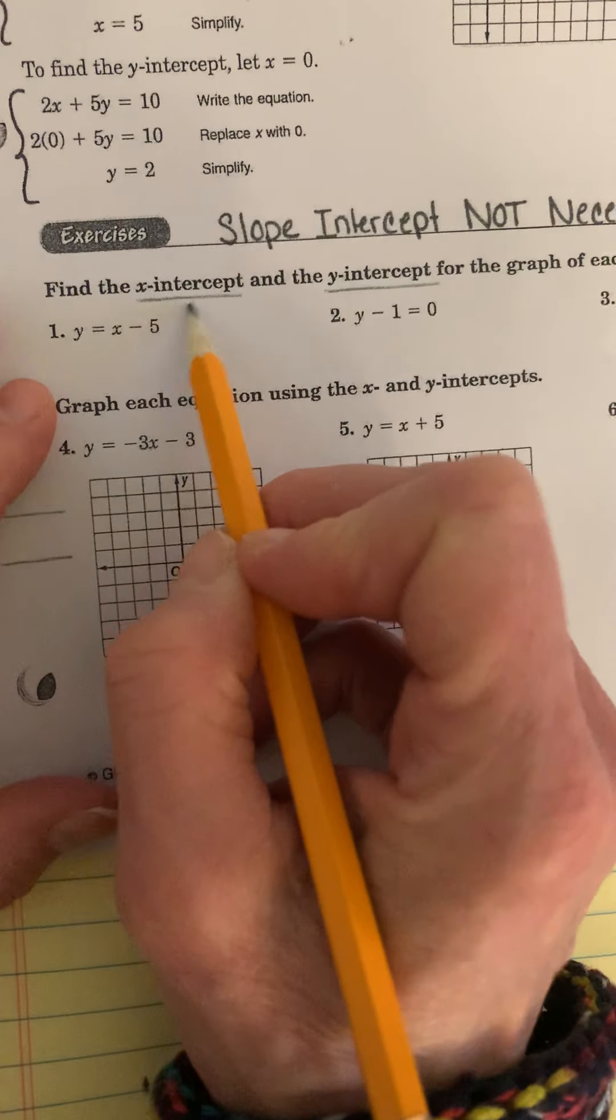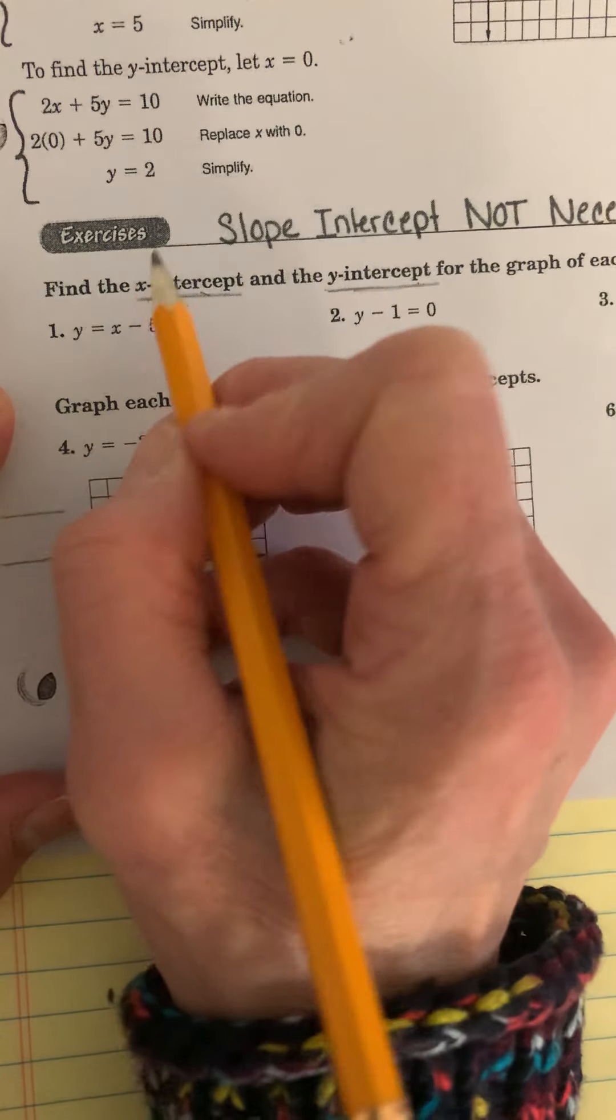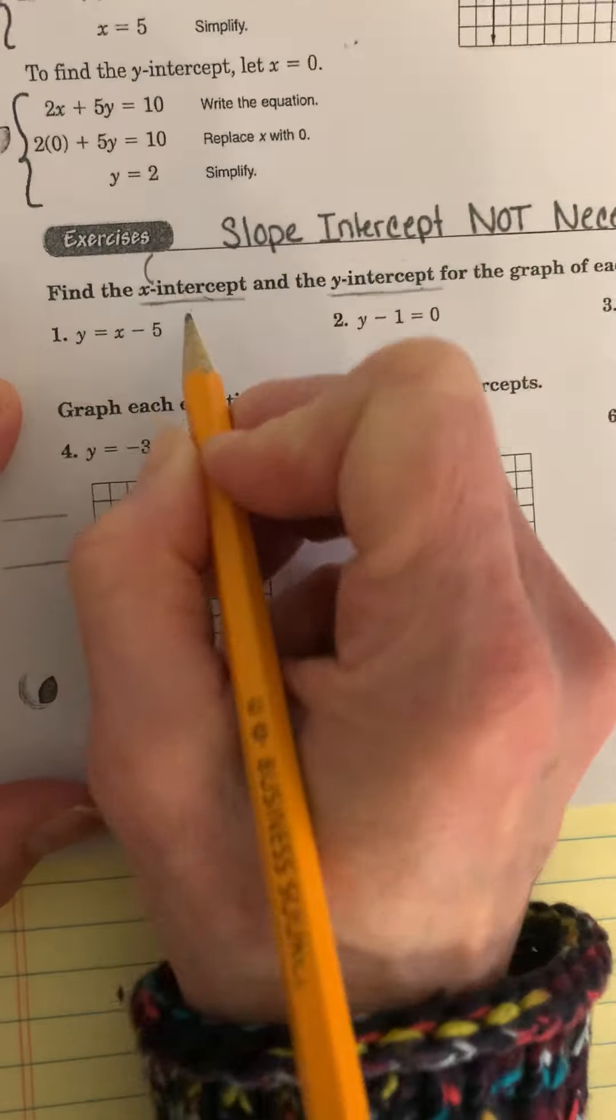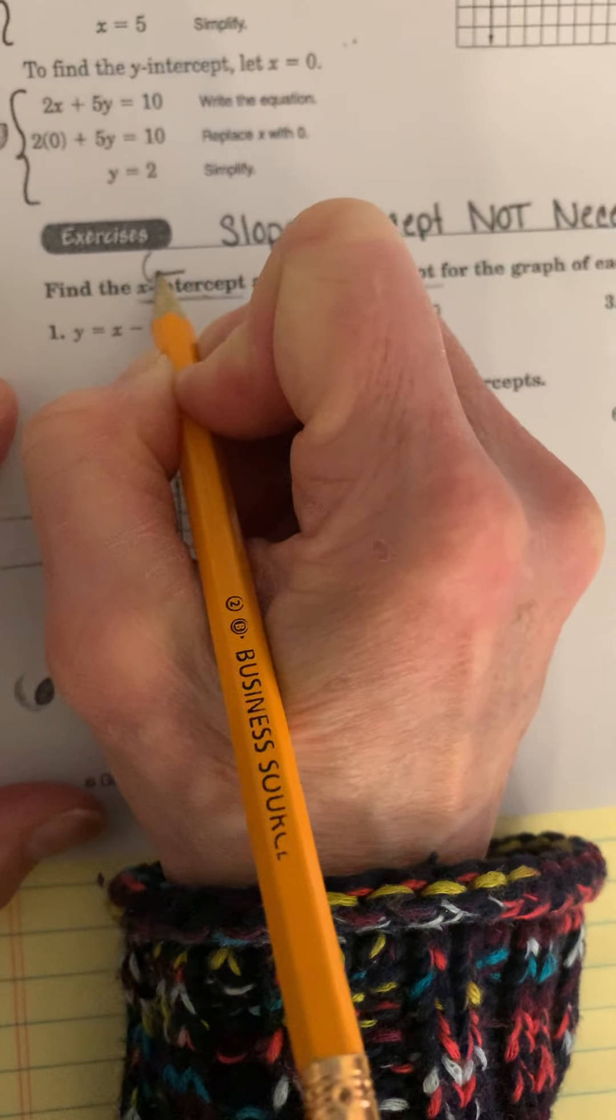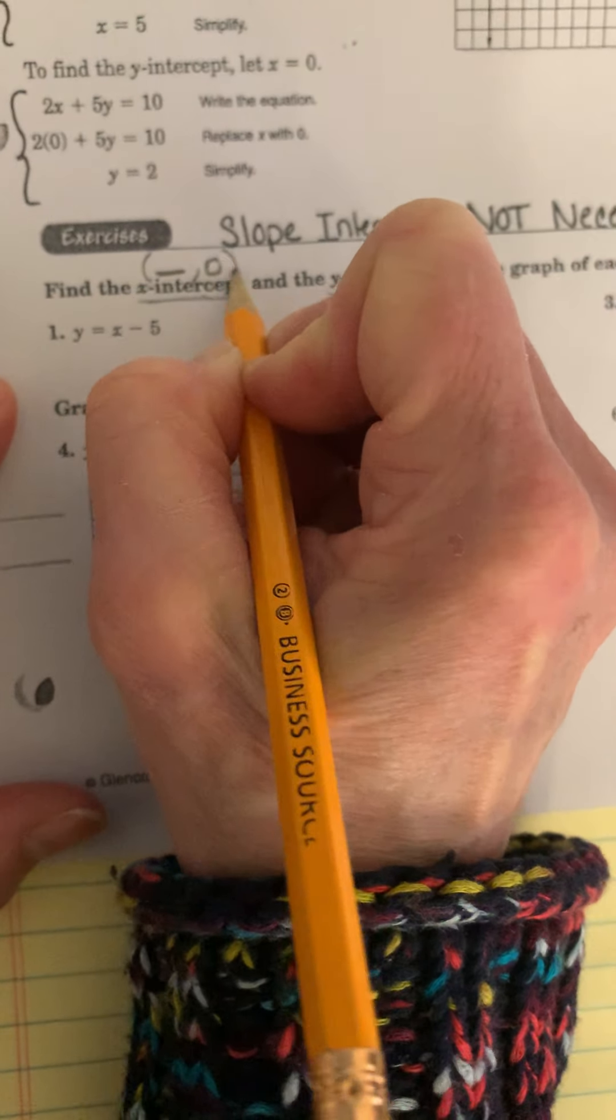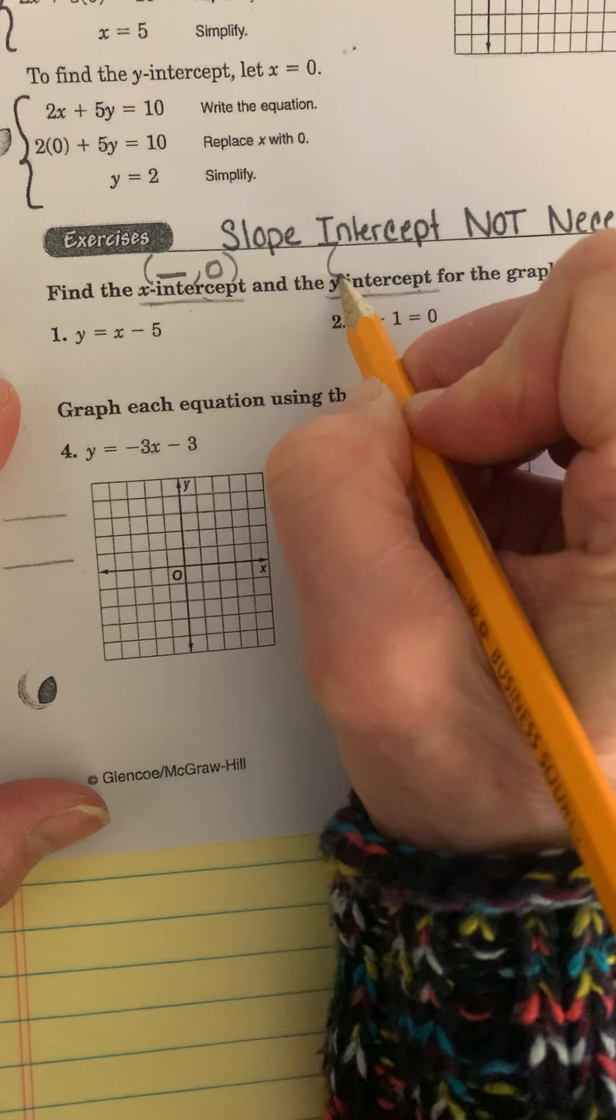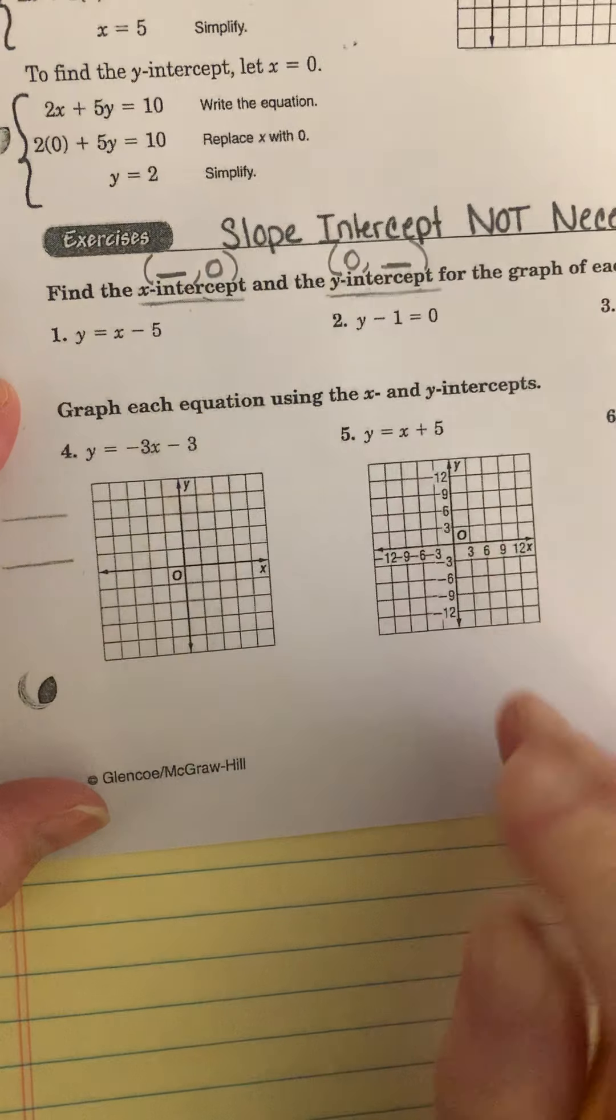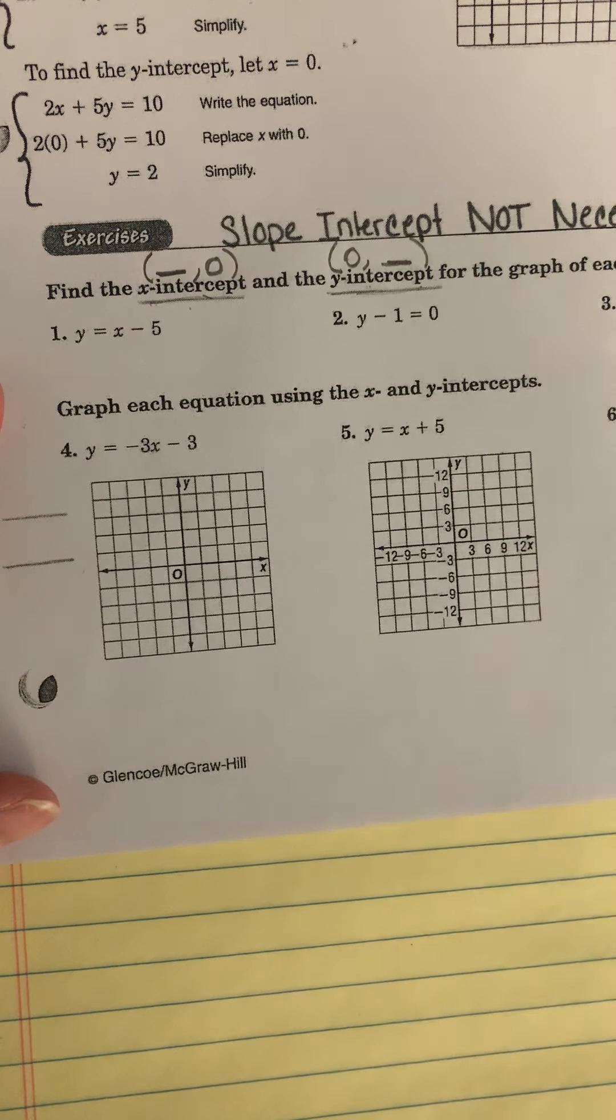So here's what you want to do. When you want to find the x-intercept and the y-intercept, when you want to find the x-intercept, let's just remember this: x-intercept is going to be, I want x, plug zero in for y and solve. The y-intercept means plug zero in for x, I want y. Just remember that those are your ordered pairs.